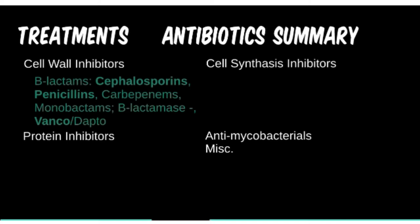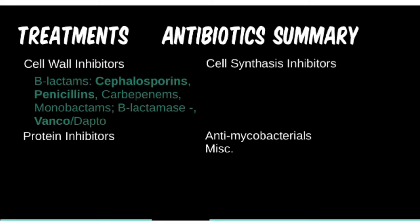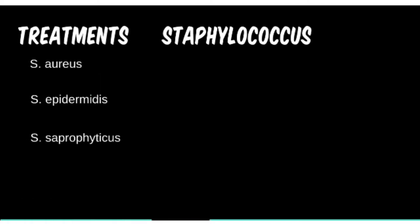Vancomycin is useful in beta-lactam resistance and multi-drug resistant microbes, but only has gram-positive coverage and has many side effects. Daptomycin has been used in some vancomycin-resistant infections but is also limited to gram-positive coverage. It is inactivated by surfactant in the respiratory tract, making it less effective in respiratory diseases.